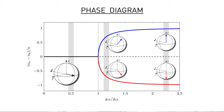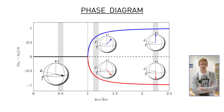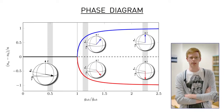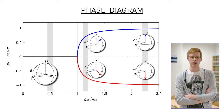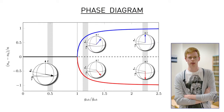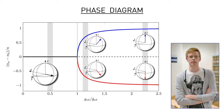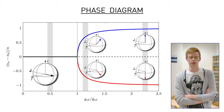The Rabi coupling tries to maintain the spinor order parameter in the x-y plane of the Bloch sphere, while the imbalance between the inter-species interactions favors a non-zero polarization along the z-axis, that is, a finite polarization.